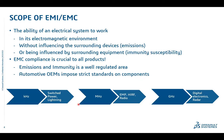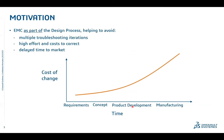At kilohertz frequencies you would have lightning strikes and switched-mode power supply (SMPS) signals. In the megahertz range, you would have electromagnetic pulse (EMP), HIRF, and similar phenomena. At gigahertz frequencies, examples include high-frequency FET switching in digital electronics.